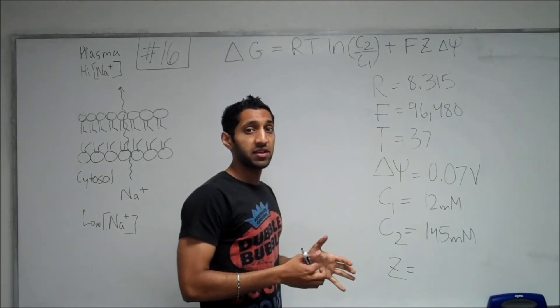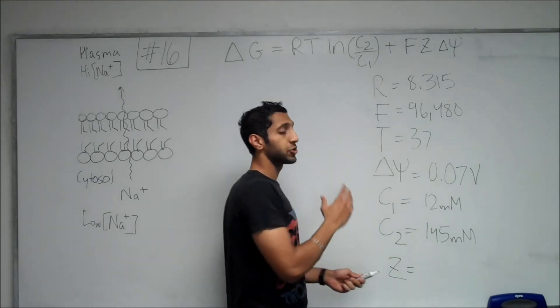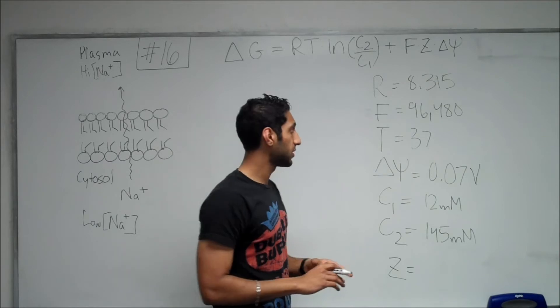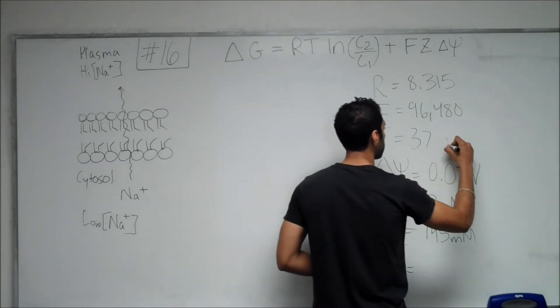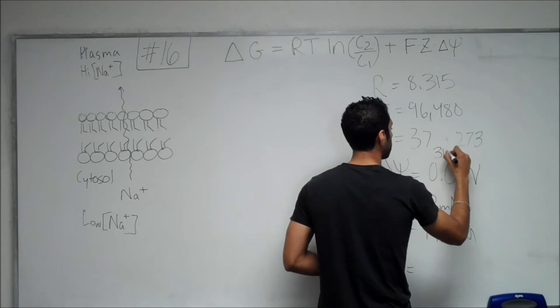So, in any of these kinds of problems, you need to make sure the units are correct. In temperature, we need them in Kelvin. We were given 37 degrees in Celsius. So, what you do is you add simply 273 to it and you should get 310 Kelvin.